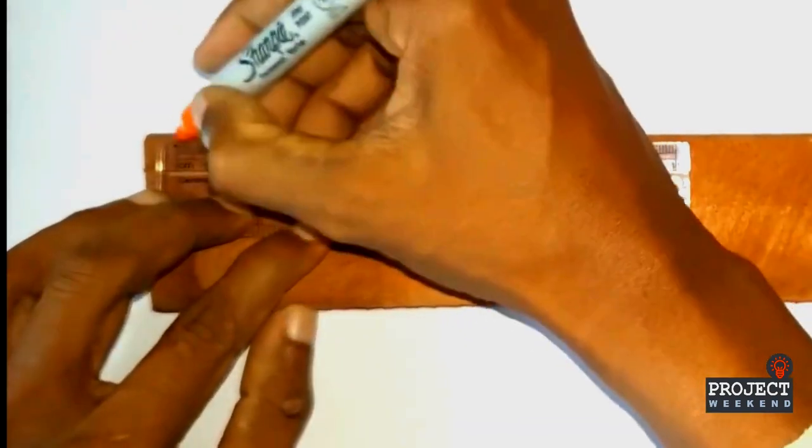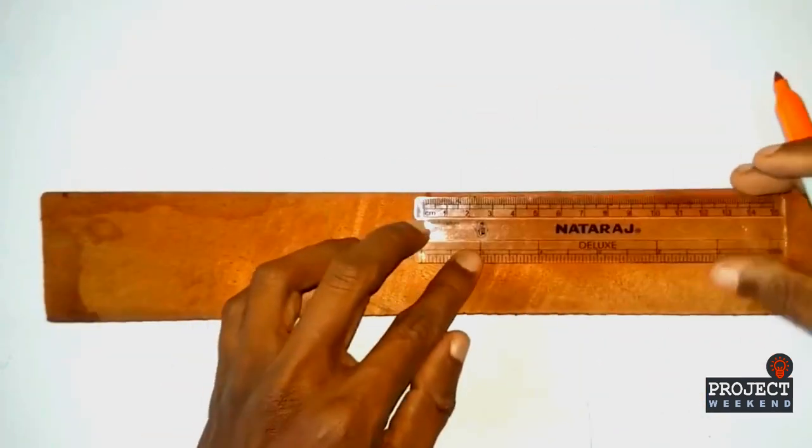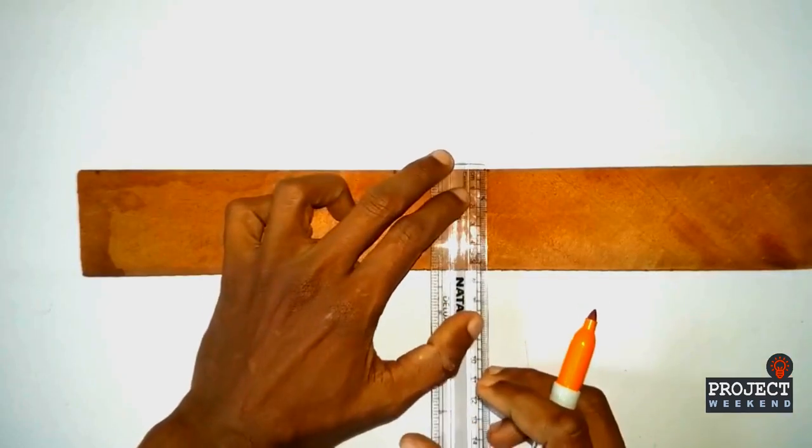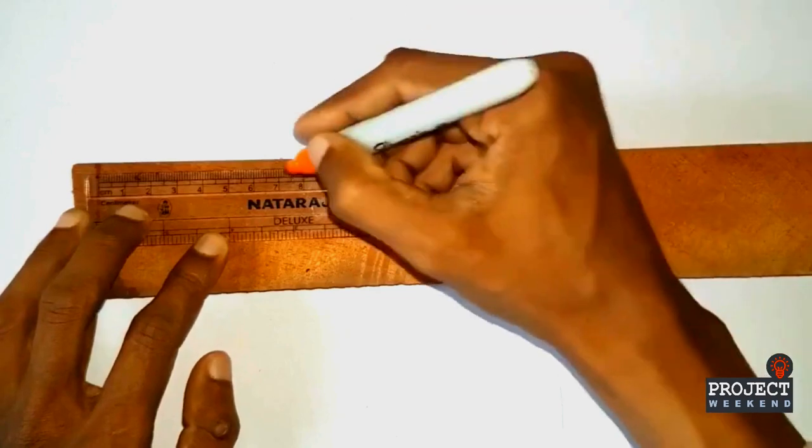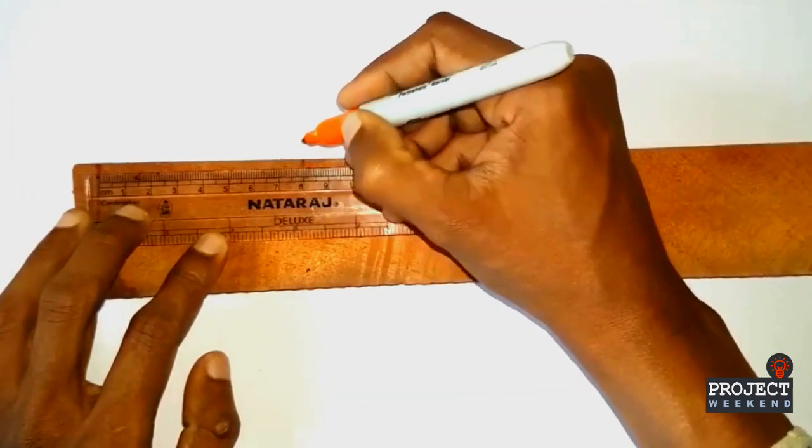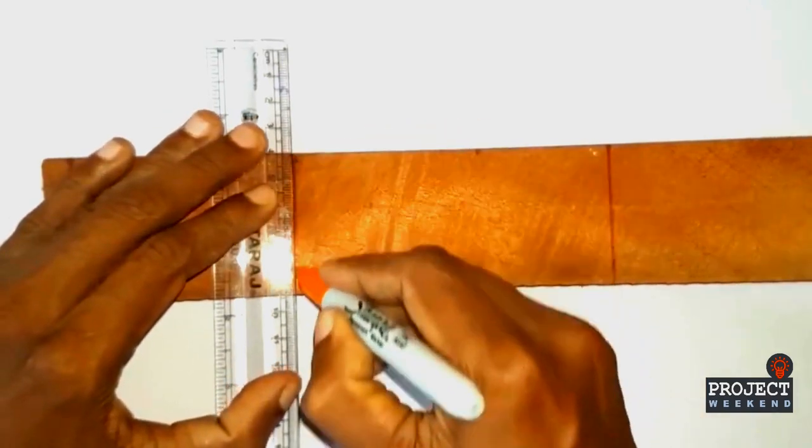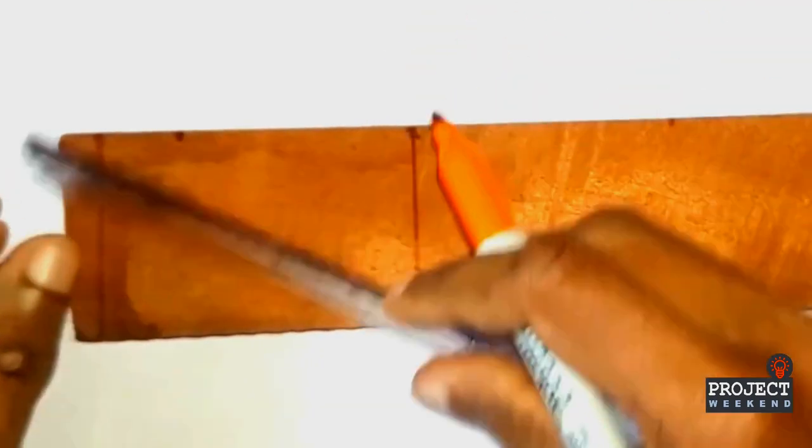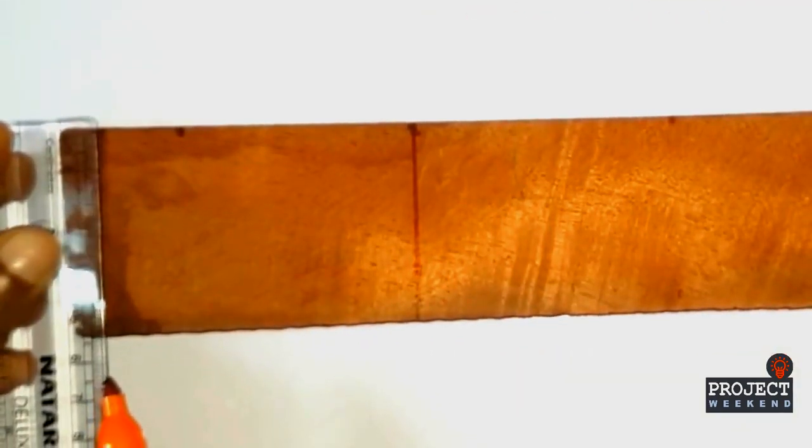First, measure and mark 20 centimeters on the upper side. Mark the cutting lines. Mark a middle point at 8 centimeters. Mark another point at 2 centimeters, 2 centimeters from the top.